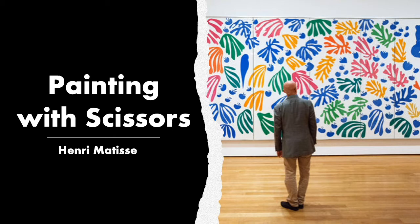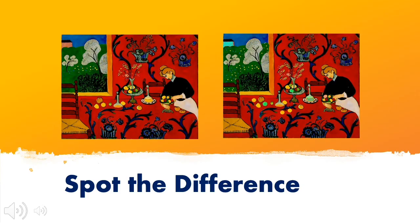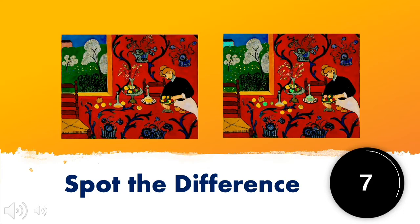Hi, welcome to today's art lesson. Today we're going to be looking at the work of Henri Matisse and learning how to paint with scissors. Let's start off by having a look at these two paintings — the same painting by Henri Matisse — and I want you to take a closer look and see how many differences you can see.